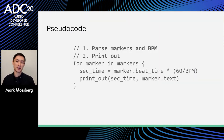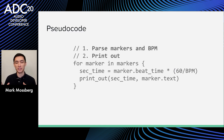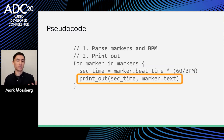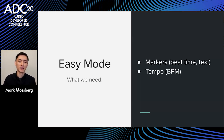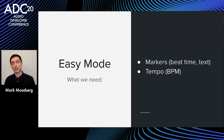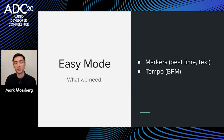Here's the pseudocode for easy mode: first, parse out the markers and the BPM. Once we have that information, iterate through the markers, do the conversion from beat time to seconds, and print them out with whatever formatting we'd like. For easy mode we need from the project file: the markers' beat time and text, and the project's tempo. Let's dive into the actual project files.